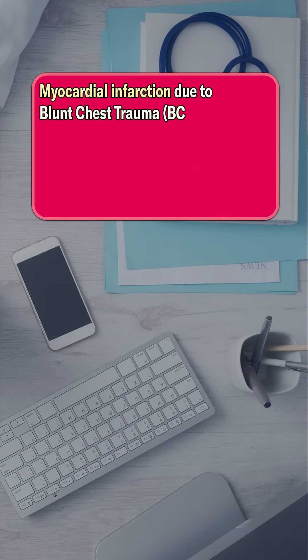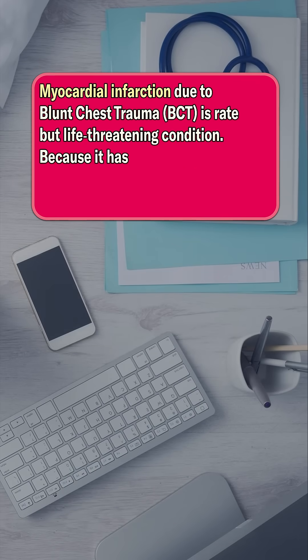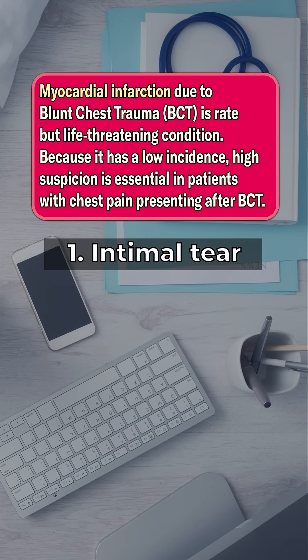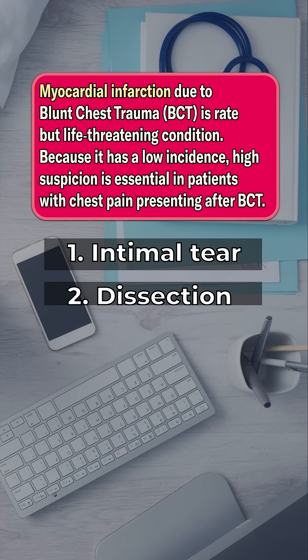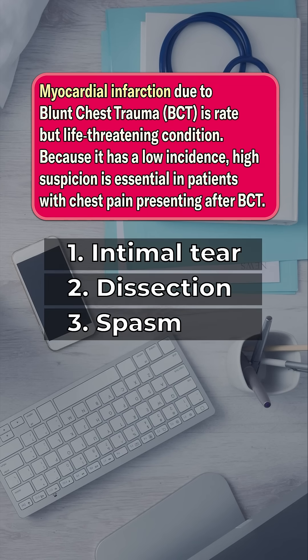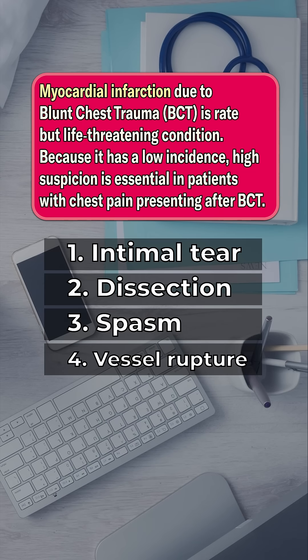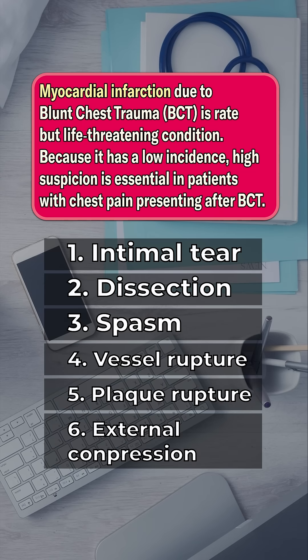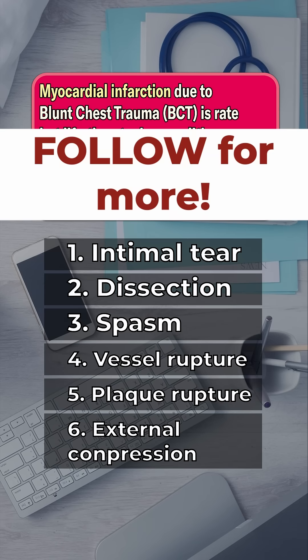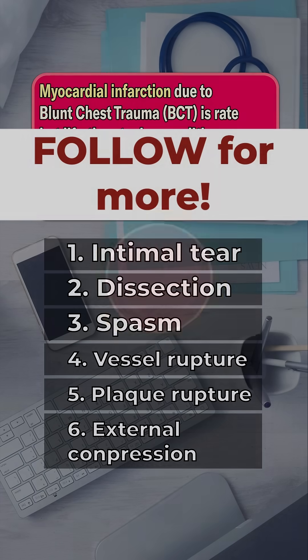So this patient had a myocardial infarction caused by blunt chest trauma. Possible mechanisms include intimal tear, coronary dissection, spasm, vessel rupture, plaque rupture, or even external compression. Follow for more real ECG dilemmas.